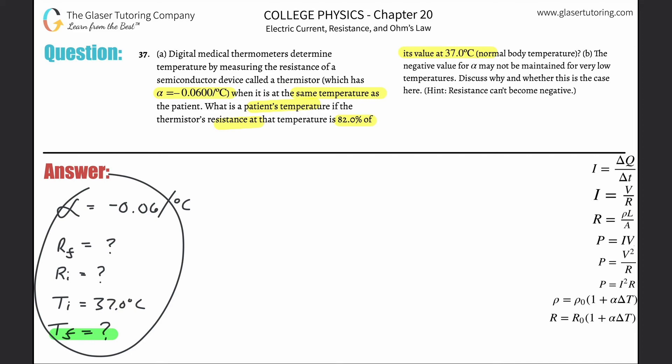If you take a step back and look at these variables that are given, it's clear what formula we're probably going to use. Here's a formula over there on the right-hand side where it says the resistance at some temperature, I'll call this the final temperature, is equal to the resistance at the initial temperature multiplied by one plus the temperature coefficient alpha multiplied by the change in temperature. Change in temperature we can write simply as the final temperature minus the initial, it's always final minus initial.